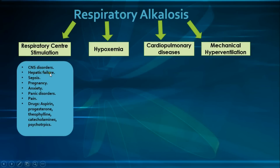Then we have hepatic failure. Liver failure is thought to cause hyperventilation through accumulation of progesterone, ammonia, glutamine, and VIP — vasoactive intestinal peptide — all of which directly stimulate the respiratory center. And then we have sepsis, which stimulates the respiratory center through endotoxins and other inflammatory mediators.